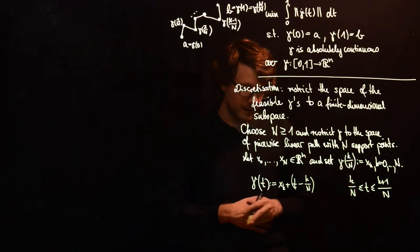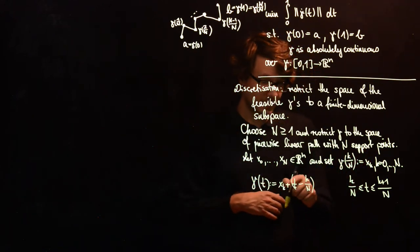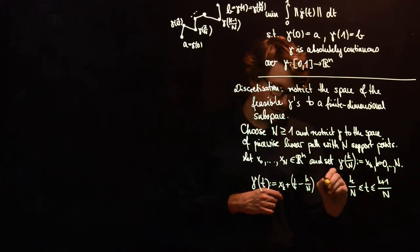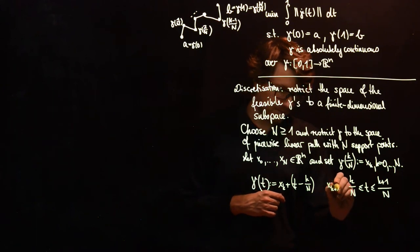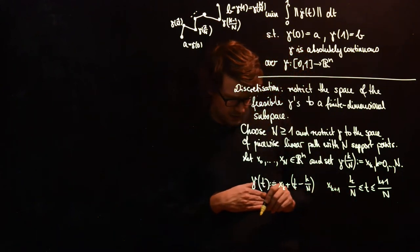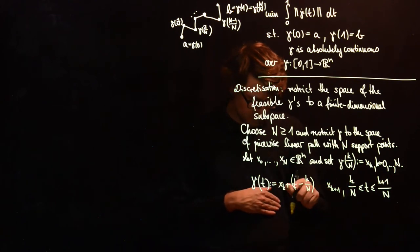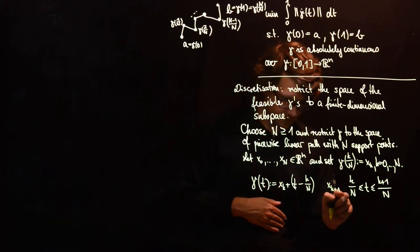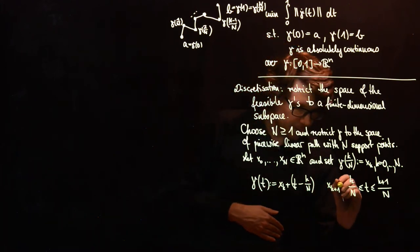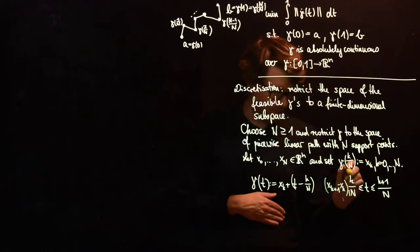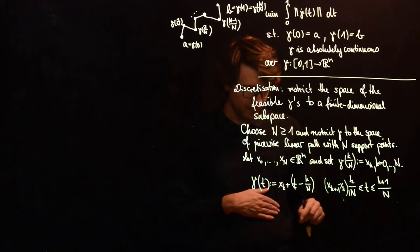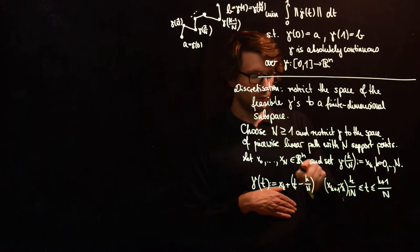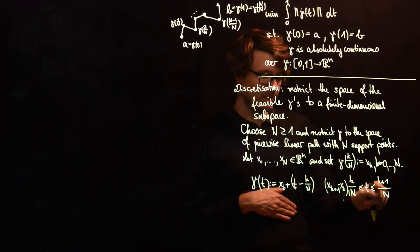And if we go further to t equals K plus 1 over N, then we want to be in xK plus 1. And what we need in between is... so first of all we need to subtract this point again, and then we want the factor in between this xK plus 1 minus xK to be 1 when t is equal to K plus 1 over N.